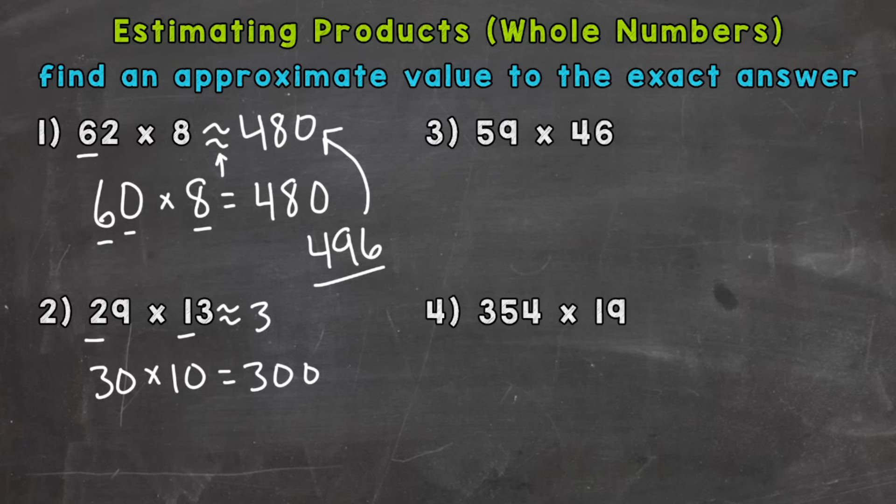That's an estimate you can use. Now we're going to get a closer or better estimate, because the closer you round to the original problem, the better your estimate is going to be. 29, I'm going to round to 30 again. But 13, I'm going to keep the same, because I know what 3 times 13 is, and that's going to give us 39. And I can place that zero back on to give us an estimate of 390.